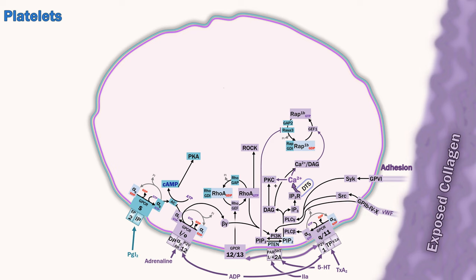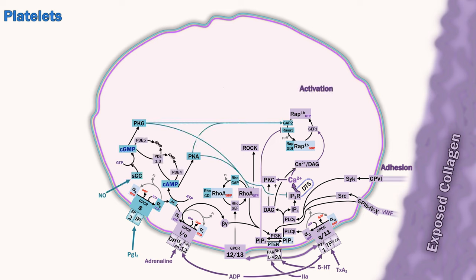Deficiency of this complex causes a bleeding disorder called Bernard-Soulier syndrome, while GP1B gain of function also causes bleeding that mimics von Willebrand disease, known as platelet-type or pseudo von Willebrand disease. The cyclic GMP pathway, again stimulated by nitric oxide, complements the cAMP pathway and inhibits Gq11 and G12/13 mediated activation.